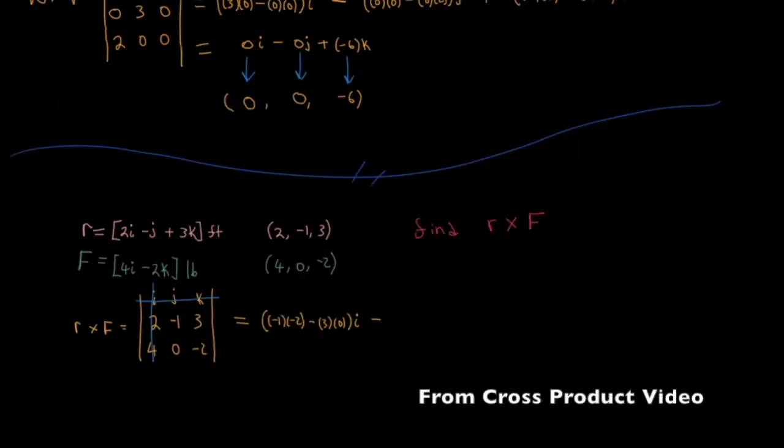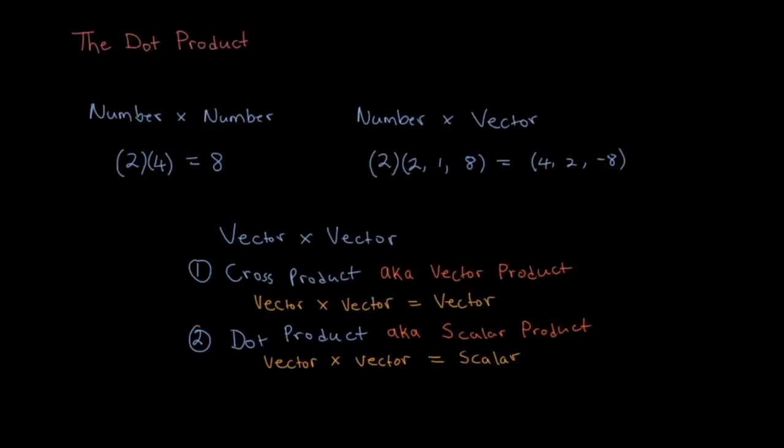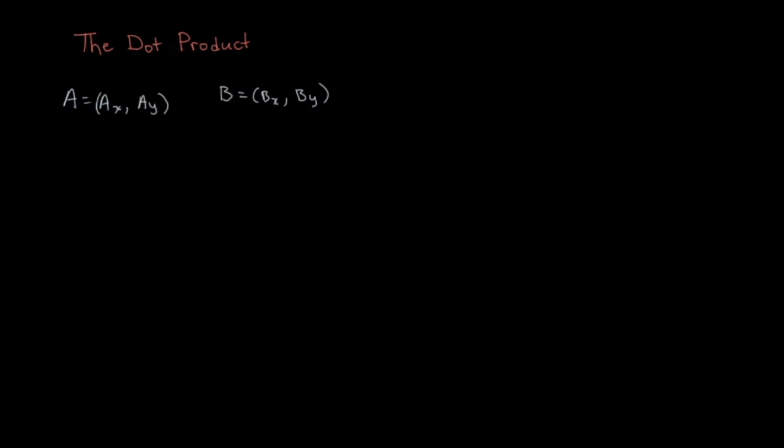I've made a separate video about the cross product and I'll link it here. But I'm going to focus on the dot product in this video. Consider two vectors, vector A and vector B. And both vectors have x and y coordinates.